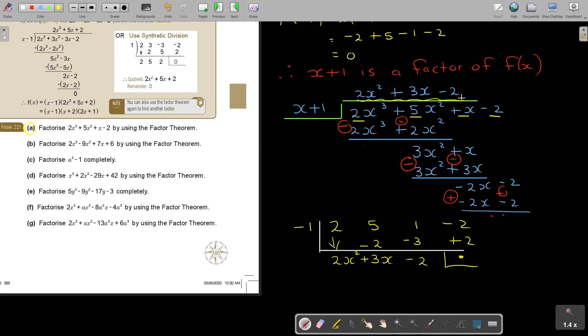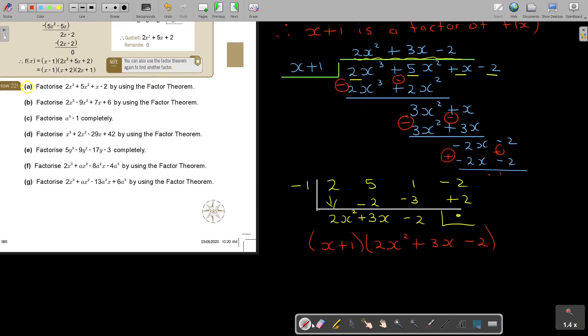So, basically, I'm ending now with the x plus 1. That's the factor. And then the quadratic, which is the 2x squared plus 3x minus 2. And then, I'm going to factorize again. And I'm going to say 2 and 1, 2 and 1.